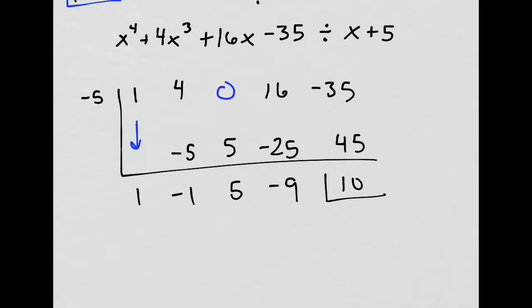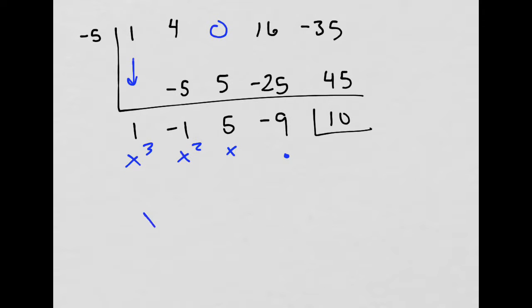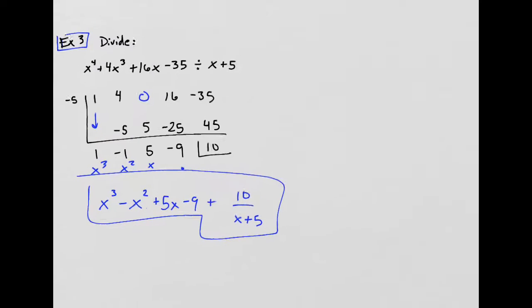Remember, this is the remainder. This is my constant term. I put the dot there for a reason. x, x squared, x cubed. Oh, so my answer is x cubed minus x squared plus 5x minus 9 plus 10 divided by the divisor, x plus 5. Super quick. Did that in 2 minutes and 20 seconds, and I'm explaining it.